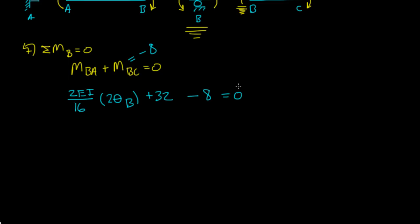So if we simplify this equation a little, well, this 2 and then the 16 and 2 here, that's EI over 4 times theta B, and then 32 minus 8, that's positive 16, is equal to zero. If I brought over 16 to the other side and I multiplied by 4, basically to solve for theta B, theta B, right, this is just algebra, theta B is equal to negative 64 over EI.